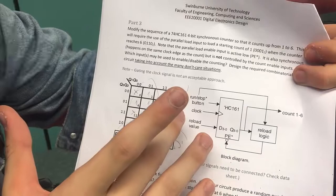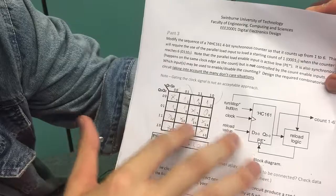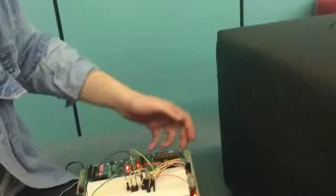When Q1, Q2 is 1 and it's at 6, it will reset and the PE will be low. The others like 0, 7 and all the others here are taken as don't care.